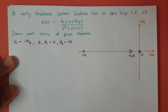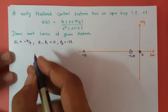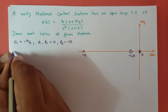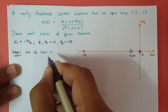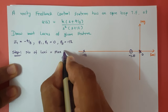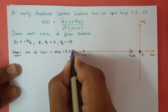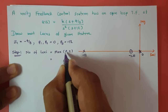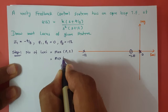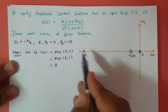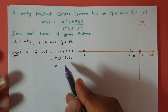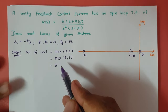Next we need to identify how many loci are there in this system. The number of loci means the number of lines in the root locus. This is the maximum of number of poles or number of zeros. Here, number of poles is three and number of zeros is one, so the number of lines in this root locus is three.